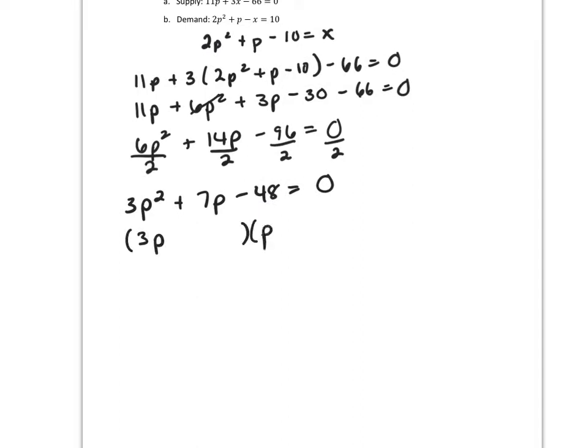3P plus 16 times P minus 3. Let me check my factoring: 3P times P is 3P squared, 16 times negative 3 is negative 48, and 16P minus 9P is positive 7P. So my factoring is correct. I'm going to erase my factoring check.